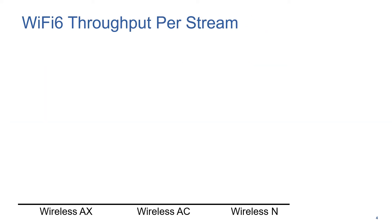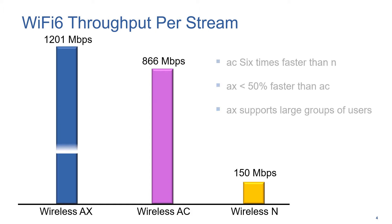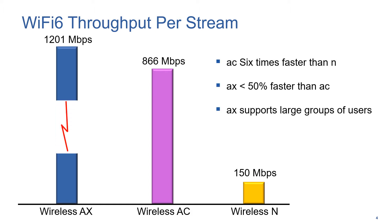Let's take a look at Wi-Fi 6 throughput per stream. What I'm showing in this example is per stream — so this is a throughput for just one stream. Using these technologies, like Wireless N, for example, we can have up to 4 streams. With AC, we could have up to 8 streams. And for AX or Wi-Fi 6, again, we can have 8 streams.